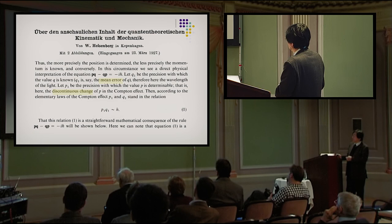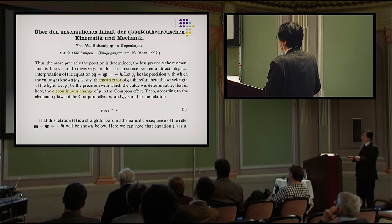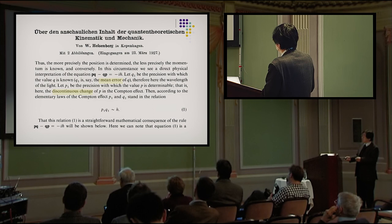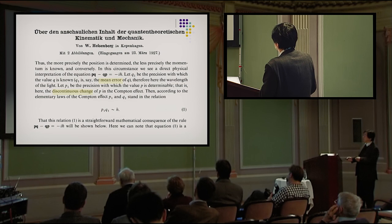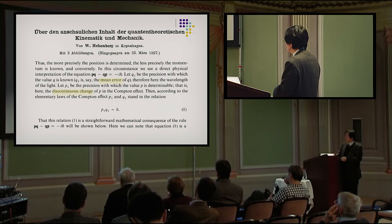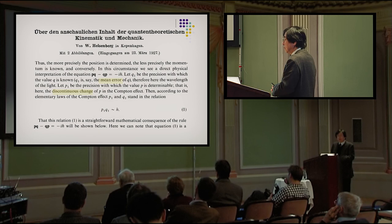In his original paper, in the place where he explains this thought experiment, he calls Q1 the precision with which the value Q is known — that is, the mean error of Q, namely the wavelength of light. P1 is the precision with which the value P is determinable — that is, the discontinuous change of P in the Compton effect. Then, according to the elementary laws of the Compton effect, P1 and Q1 stand in this uncertainty relation. He writes that this is a straightforward mathematical consequence of the commutation relation, to be shown below.